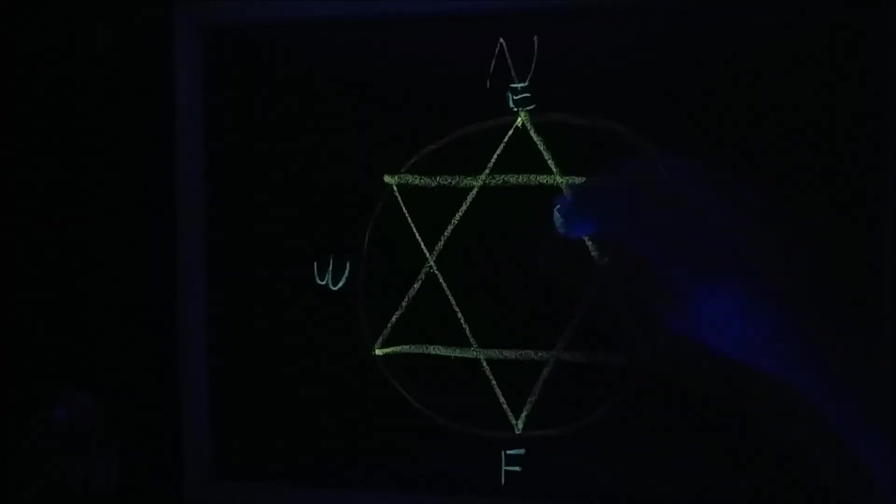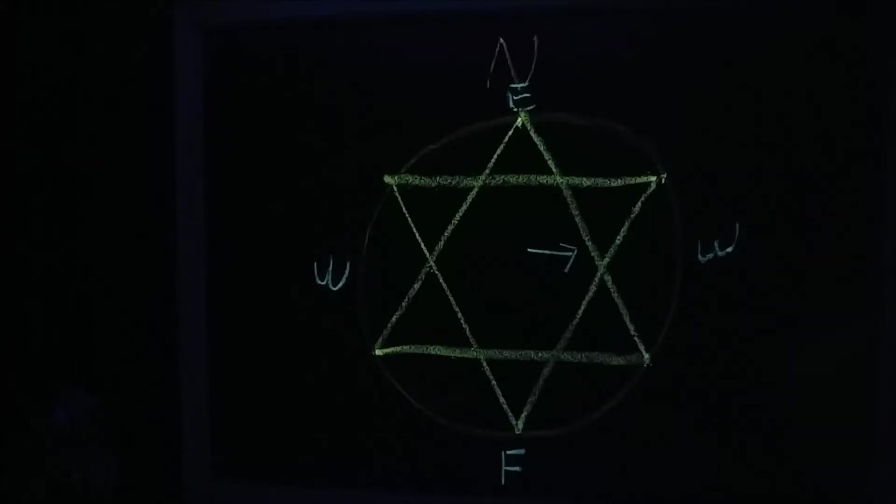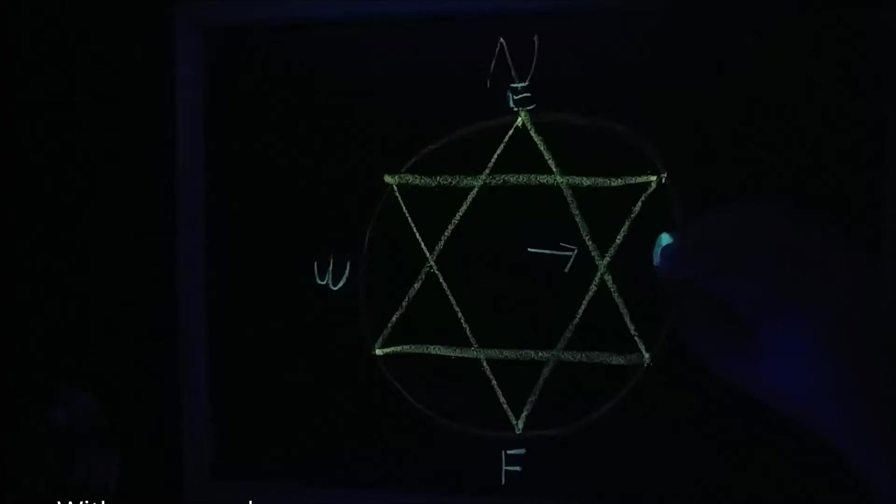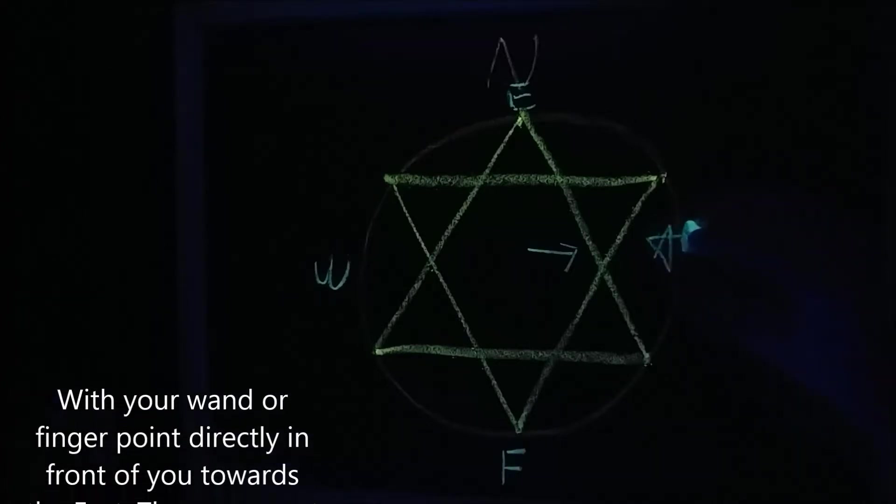So, you'll want to turn east. And what you want to do is you want to, with your wand, you want to do the symbol of a pentagram.